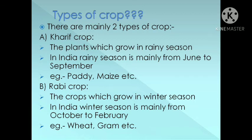Rabi crop: The crops which are grown in winter season are called Rabi crops. In India, winter season is mainly from October to February. The examples of Rabi crops are wheat, gram, etc.